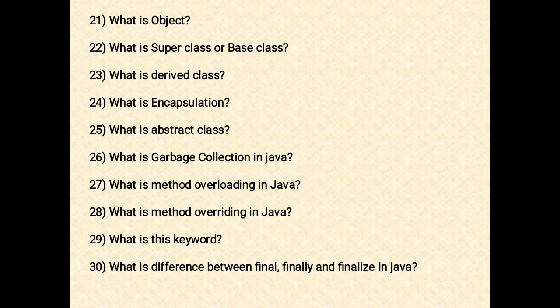The next question: what is method overloading in Java? If two or more methods in a class have the same name but different parameters, it is known as method overloading. It is one of the ways through which Java supports polymorphism. Method overloading can be done by changing the number of arguments or by changing the data type of arguments.